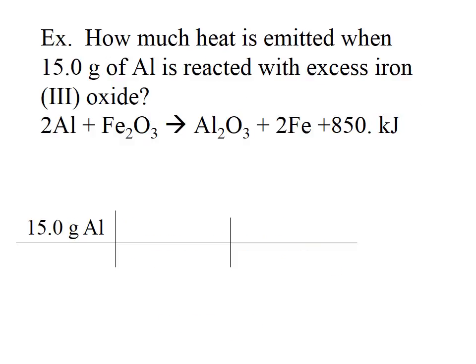In this example, we're asked how much heat is emitted when 15.0 grams of aluminum is reacted with excess iron(III) oxide. Iron(III) oxide is in excess, so we focus on aluminum.